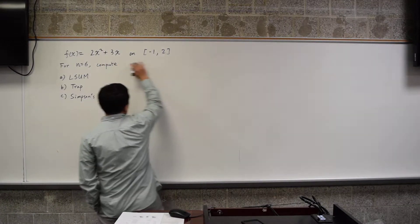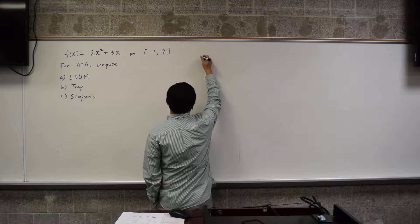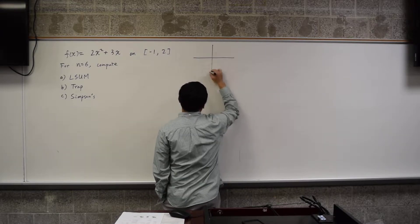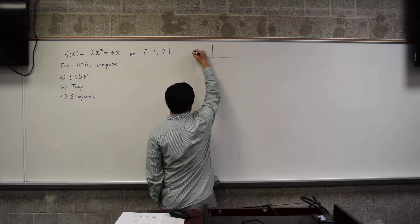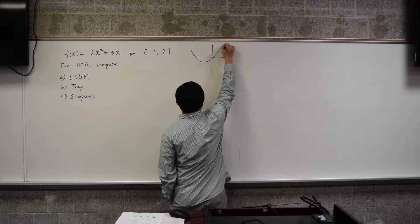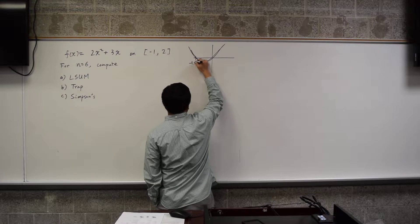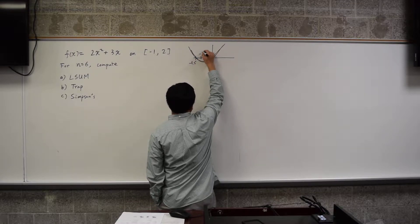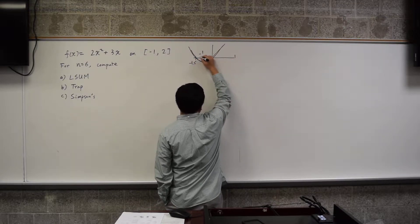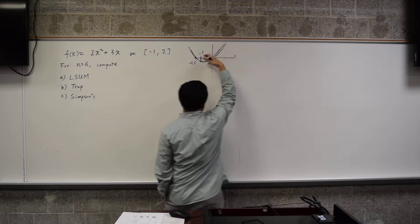All right, so you have this graph. I guess the graph has the shape of something like this where this would be negative 1.5. So if you start from negative 1 until 2, you're trying to get the area of this portion.